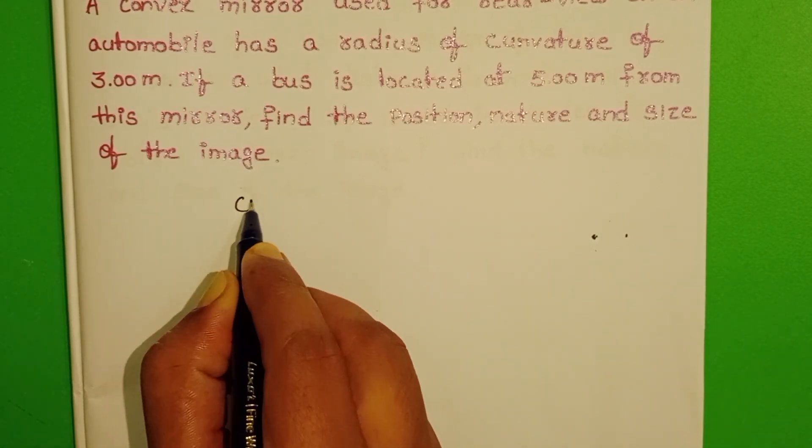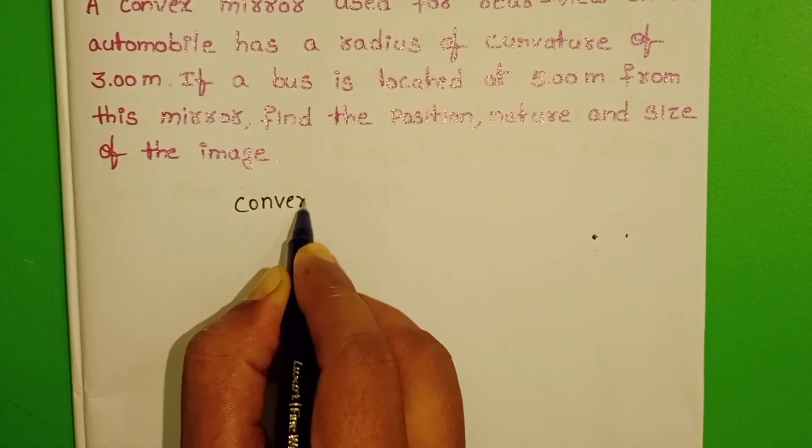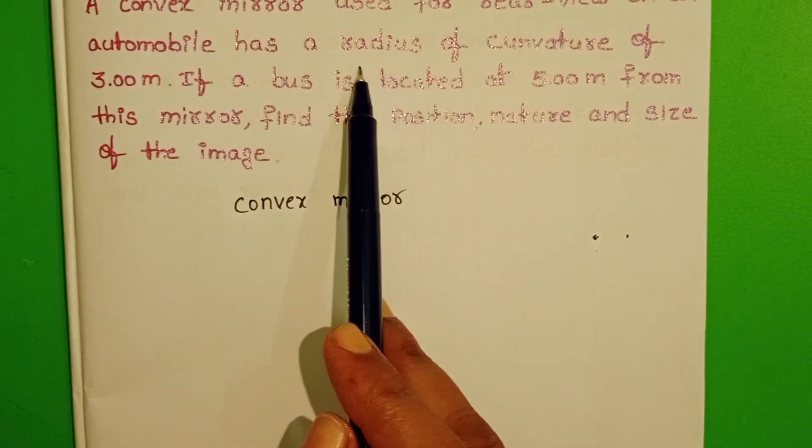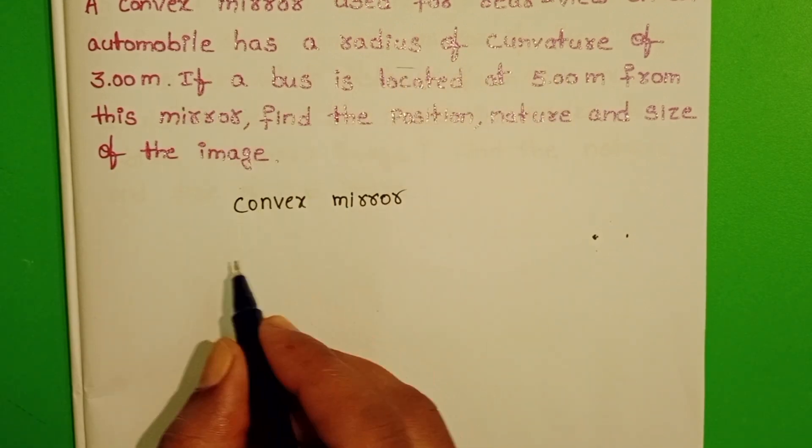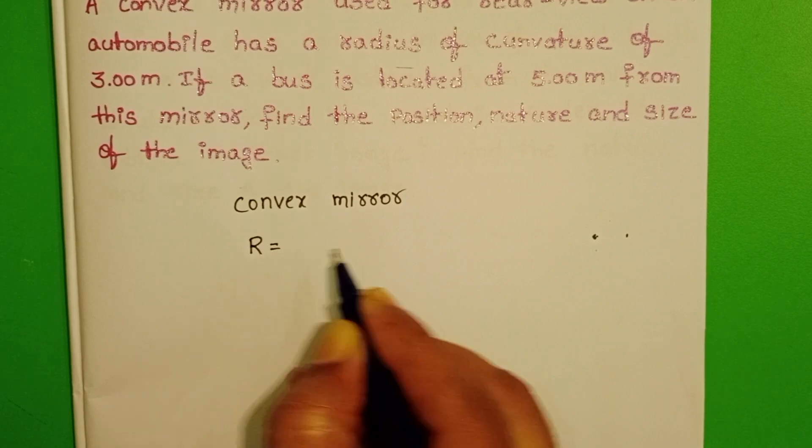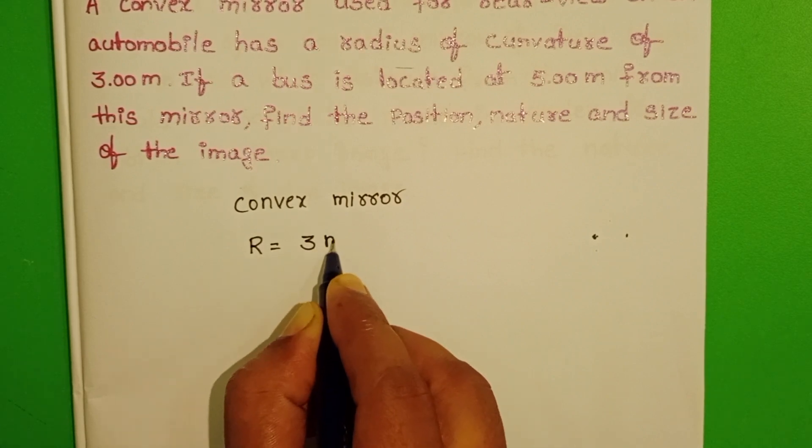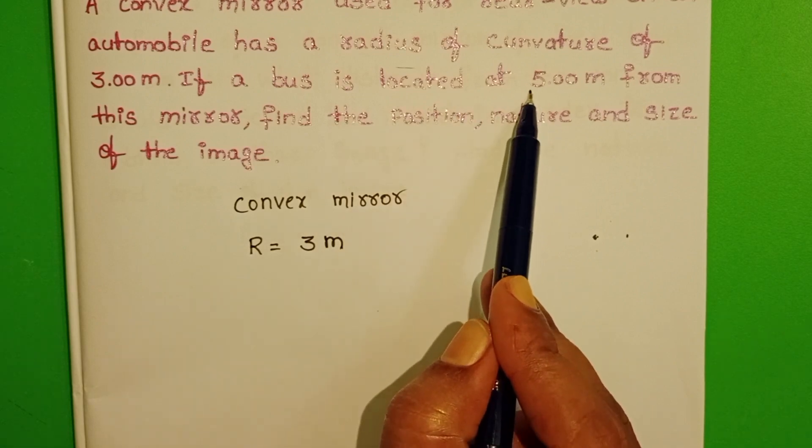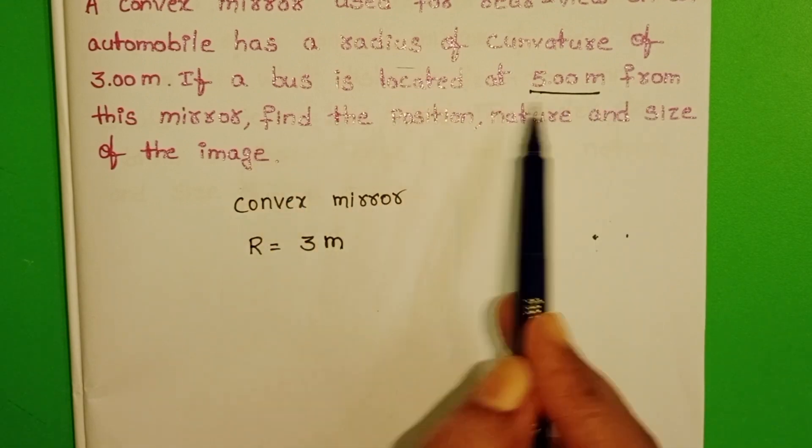First of all, the given mirror is a convex mirror. Radius of curvature of the convex mirror is positive. R equals 3 meters. Bus is located at a distance of 5 meters from the mirror.